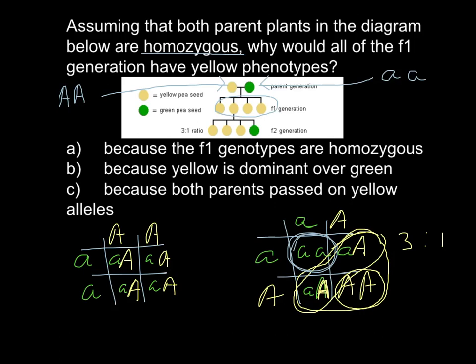Now we can choose the correct answer. Answer C is not correct because it says both parents pass on yellow alleles — but as you can see, one parent only passes green color and the other only yellow. Answer A is also not correct because it says F1 phenotypes are homozygous, but as you can see the F1 generation is heterozygous.